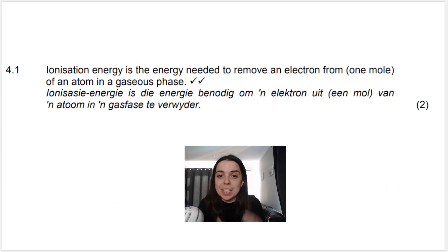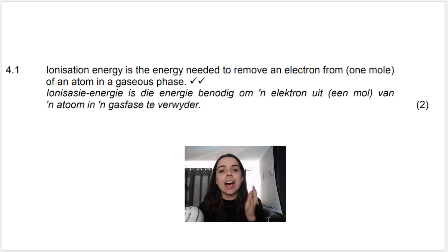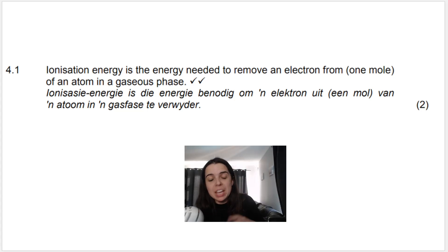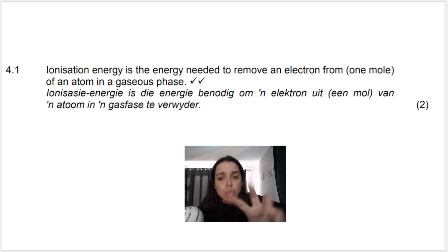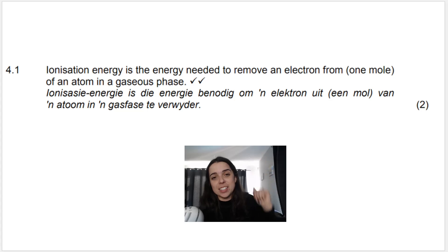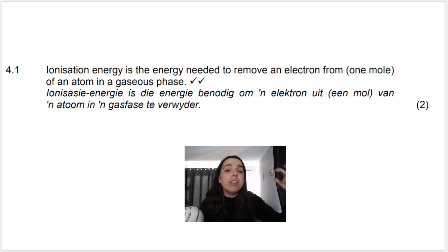Ionization energy is the energy needed to remove an electron from one mole of an atom in its gaseous phase, and it's measured in kilojoules per mole. Kilojoules is energy and per mole means per one mole. It's very important to understand what ionization energy means. Basically, it's how difficult it is to remove an electron from an atom. If it's difficult to remove an electron, that atom will have a high ionization energy because it's holding on tightly to its electrons.